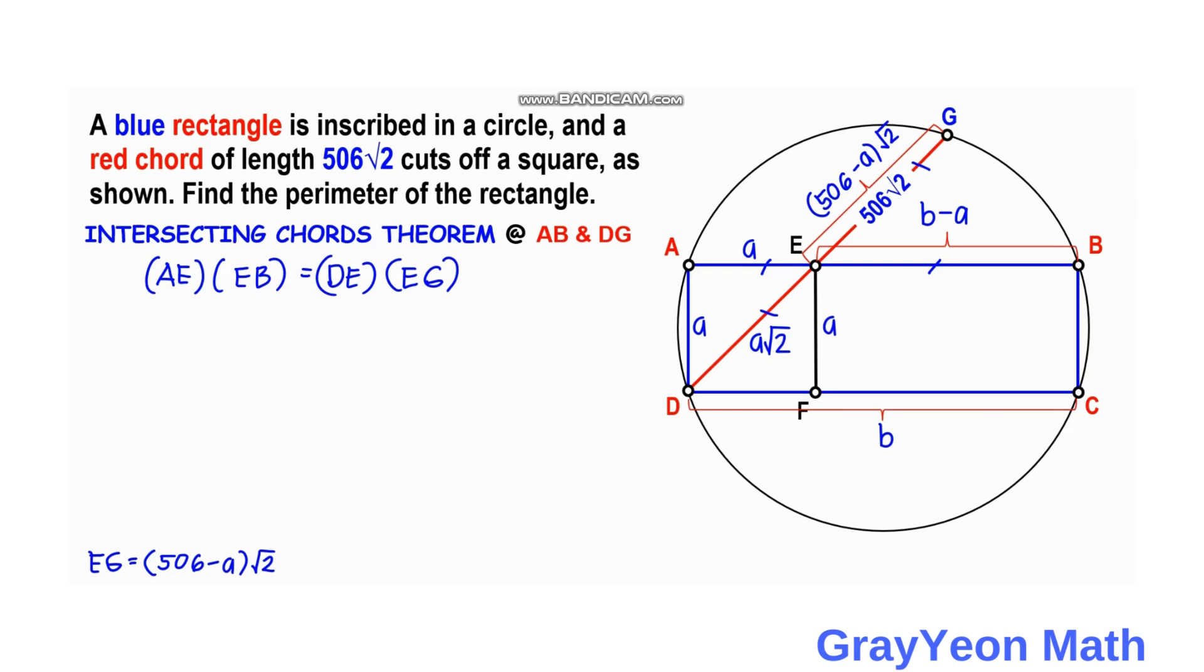So AE is equal to a times EB which is b minus a. This is equal to DE which is a√2 times EG which is (506 minus a) times √2.